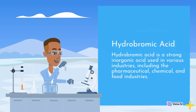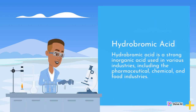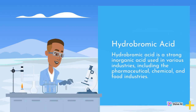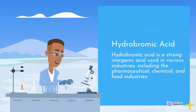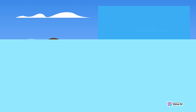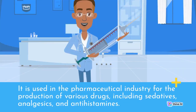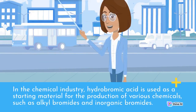Hydrobromic acid is a strong inorganic acid used in various industries including the pharmaceutical, chemical, and food industries. It is used in the pharmaceutical industry for the production of various drugs including sedatives, analgesics, and antihistamines. In the chemical industry, hydrobromic acid is used as a starting material for the production of chemicals such as alkyl bromides and inorganic bromides.